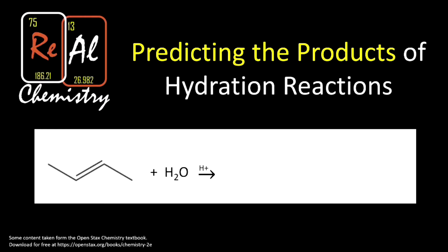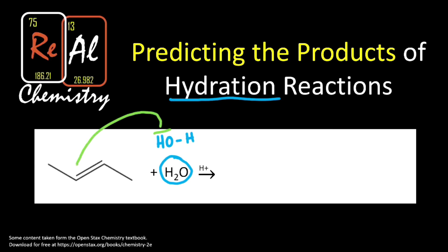A hydration reaction always means adding water to something. We have water being added to our alkyne. Water can be thought of as being OH — one oxygen and one hydrogen connected to a hydrogen, so still H2O. We're just drawing it in a suggestive way to help us think about the products. Just like in a hydrogenation reaction where you're adding H2, this adds to either side of a double bond, so we get one part adding to one side and the other part adding to the other side.